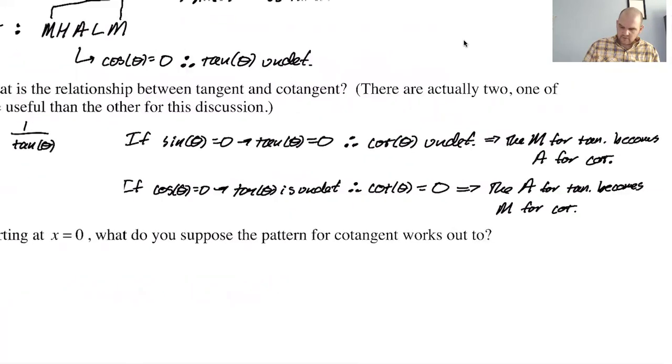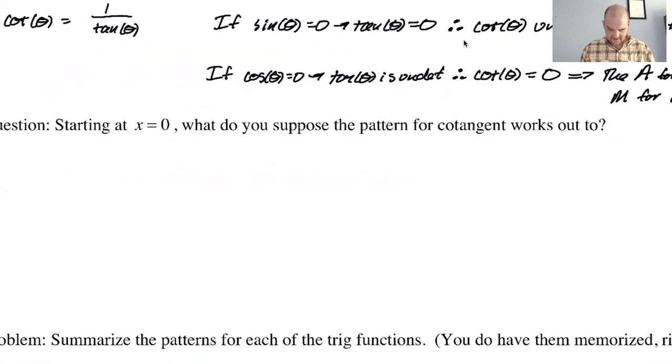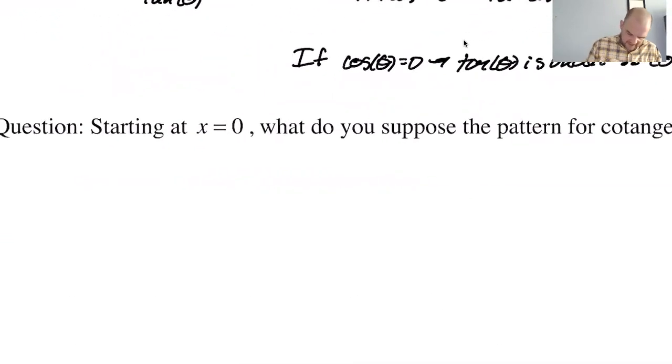So the reciprocal of one is one, the reciprocal of negative one is negative one, which means the high point and the low point don't change. They're still going to be high and low. So I think that we have tangent. Tangent looks like this: middle, high, asymptote, low, middle.